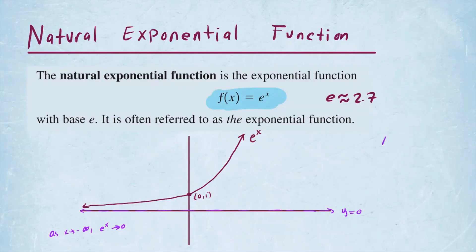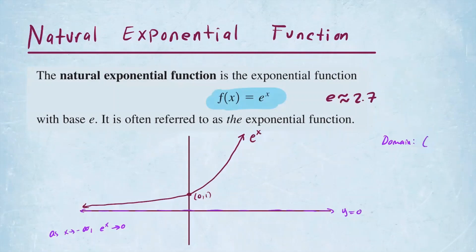Now let's go ahead and write down the domain of this function. Because our variable is the exponent, it is defined everywhere on the real line. So we can say that the domain is going to be all real numbers, negative infinity to infinity.